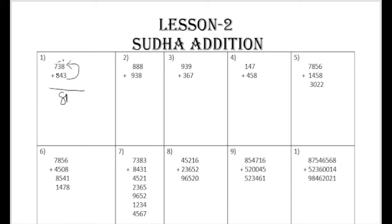Now 8 plus 7 is 15, so we write 15 here. In the second example, the same way: 8 plus 8 is 16, carry 6 will be here and sudha will be here. Now 3 plus 8 is 11, plus 1 is 12 - write 2 here and 1 will be sudha. Now 8 plus 9 plus 8 is 17, plus 1 is 18.